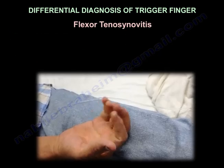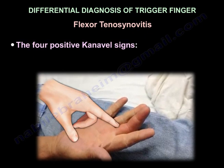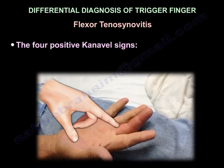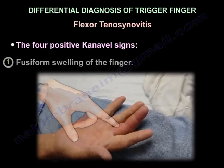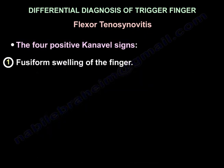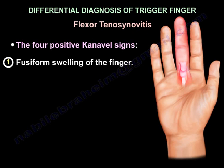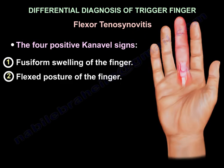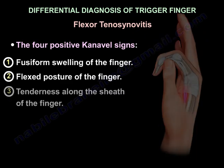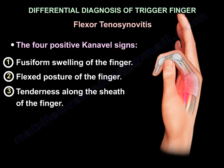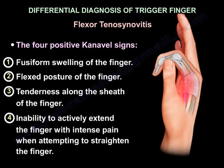Flexor tenosynovitis — the four positive Kanavel signs: fusiform swelling of the finger, flexed posture of the finger, tenderness along the sheath of the finger, and inability to actively extend the finger with intense pain when attempting to straighten it.